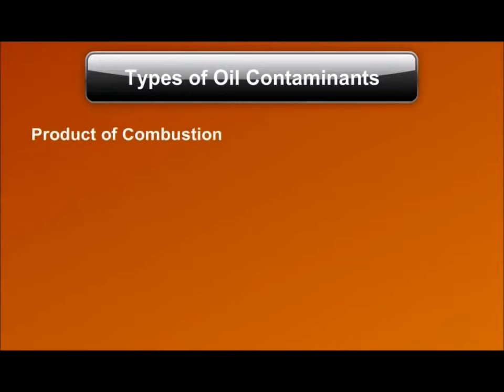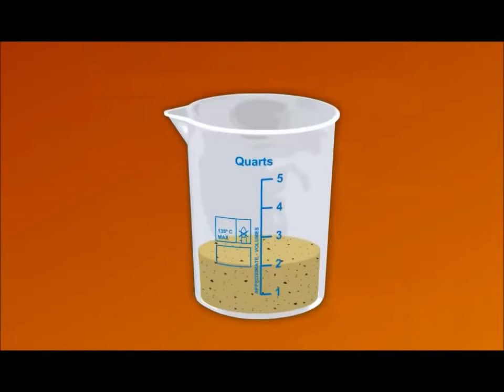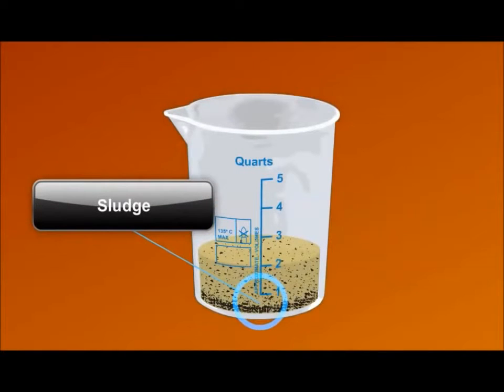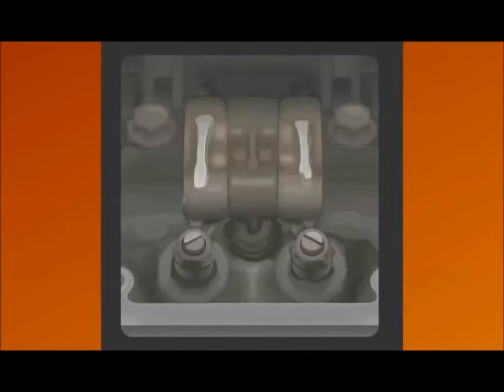Contaminants may be the product of combustion or an internal contaminant. Products of combustion include soot, carbon particulates, unburned fuel, and water. When oil remains in the engine too long, these contaminants overload the oil's ability to handle them and forms a coating called sludge. This sludge covers internal engine parts, blocks the return path to the oil pan, and reduces lubrication performance.